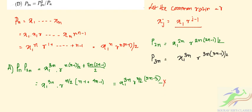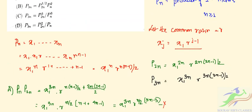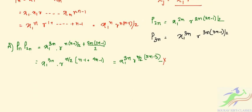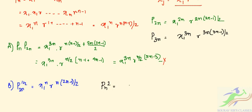The second option is given as P(2n)^(1/2) multiplied by P_n^2. So P(2n)^(1/2) = X_1^n · R^(n(2n-1)/2). And P_n^2 = X_1^(2n) · R^(2n(n-1)/2), which is X_1^(2n) · R^(n(n-1)).